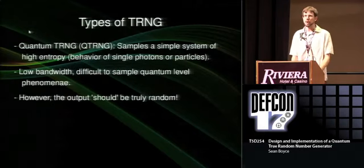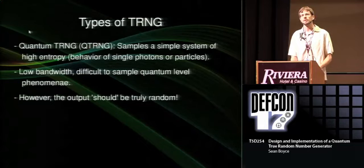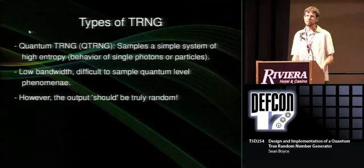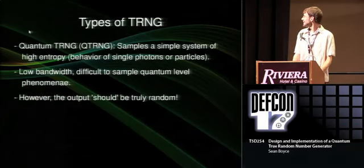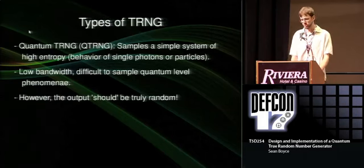With a quantum true random number generator, the main difference is that you've sampled a very simple system of high entropy, such as the behavior of single particles or photons. This is particularly interesting for a sealed radioactive source, because it has no inputs and still has outputs — making it very difficult to attack. These sources typically yield low bandwidth, because you don't want to deal with things that emit a lot of radiation, and it is also very difficult to detect subatomic particles or single photons with equipment you have around your house. However, if you overcome these obstacles, the output should be truly random.